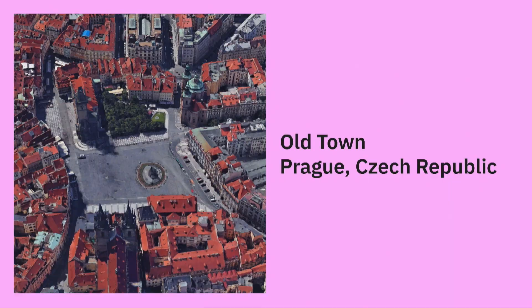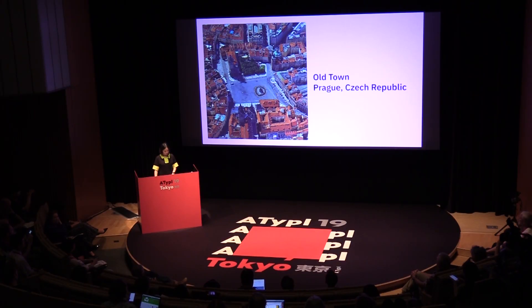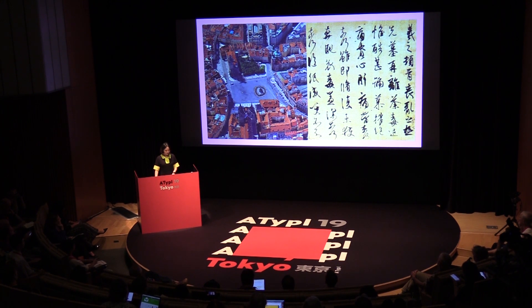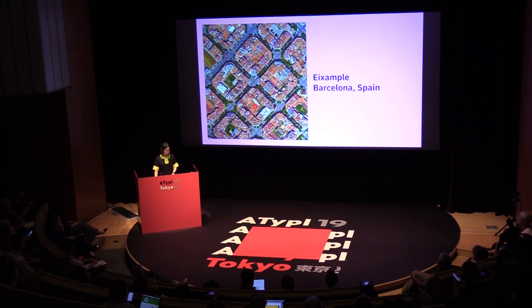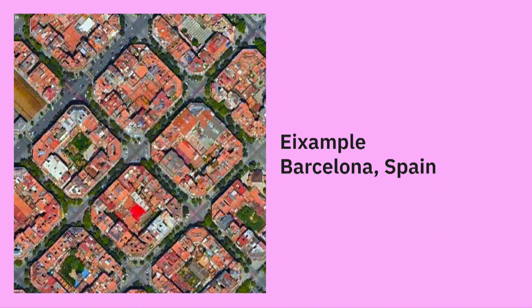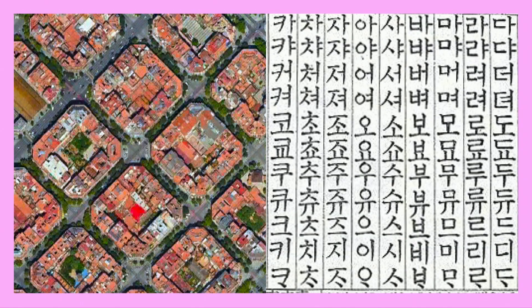This is a picture of Old Town in Prague. Here you can find a maze-like network of streets spreading out in every direction, because they were built one by one over a long period of time. This beautiful old city reminds me of Hanze, which has also evolved over a long time to include various patterns and colorful styles. And this is the Eixample district in Barcelona — this area is composed of equally-sized square blocks, forming a strict grid pattern. It was made possible because this area was built upon urban planning.